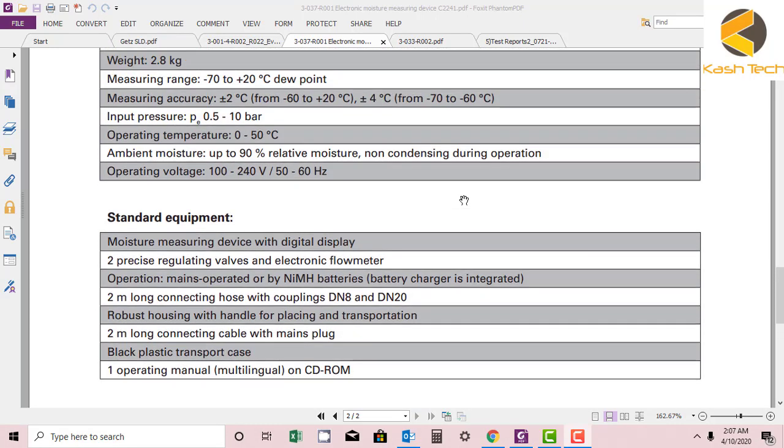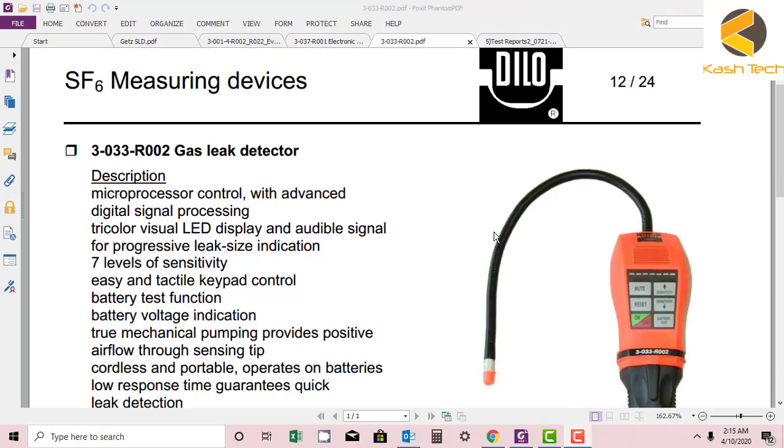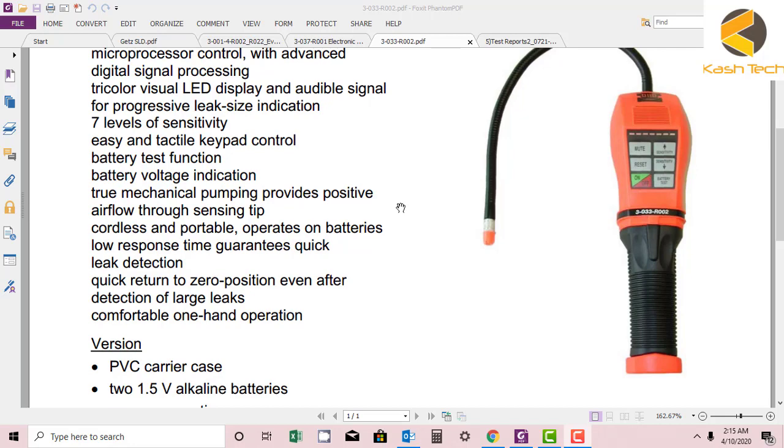Thank you very much. Welcome. Now our new device that we will discuss, that is used for maintaining the GIS, is the SF6 measuring device—gas leak detector. So how does the gas leak detector look?